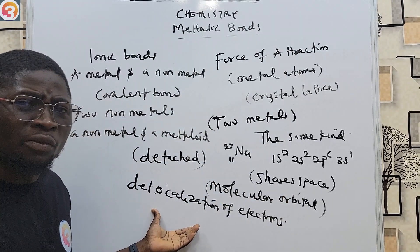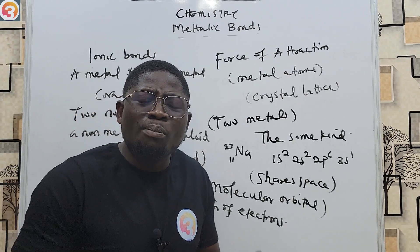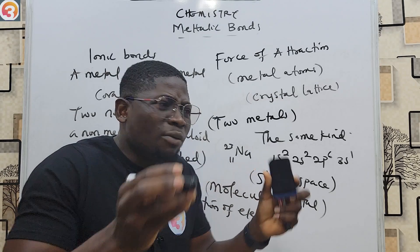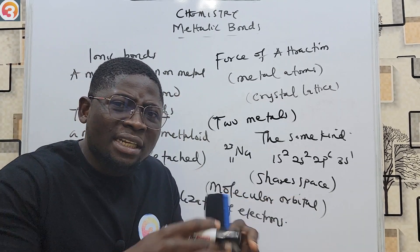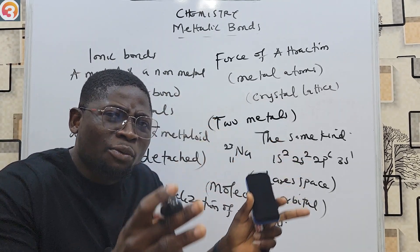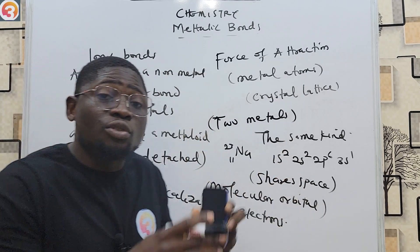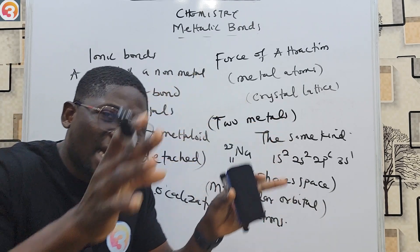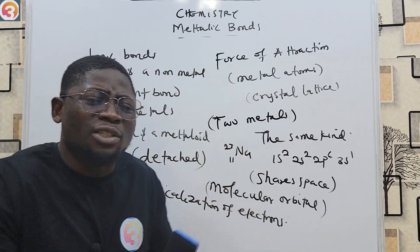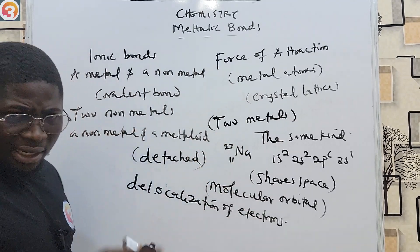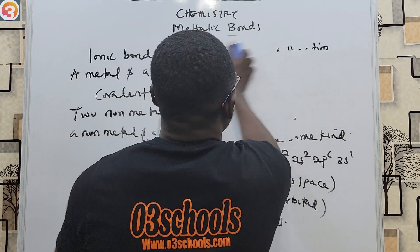Each atom in a piece of sodium metal is in contact with all the sodium atoms that surround it. Let's look at a small illustration of what that means.